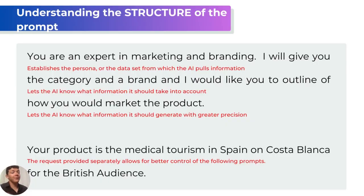Then saying 'I'll give you the category and the brand' tells the AI what information it should take into account from your following prompts. Then you specify 'I would like you to outline how you would market the product' — this narrows down what you actually want to receive, setting constraints. And 'your product is medical tourism in Spain on Costa Blanca for the British audience' is the request that provides better control over following prompts by separating it as a variable.